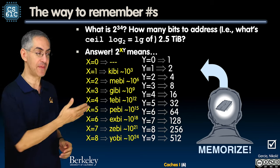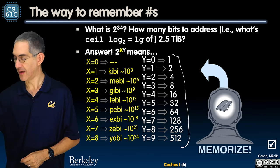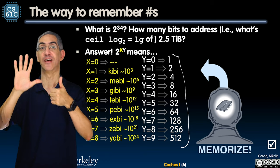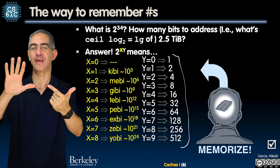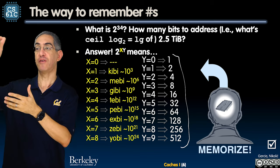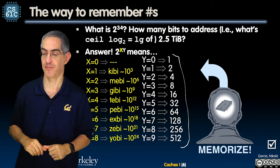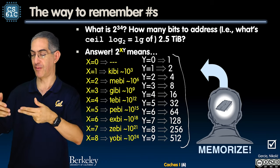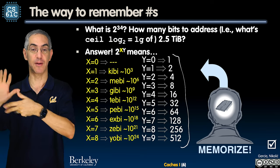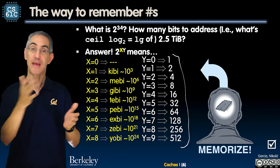Start with the ones column — memorize this sequence: 2^0=1, 2^1=2, 2^2=4, 2^3=8, 2^4=16, 2^5=32, 2^6=64, 2^7=128, 2^8=256, 2^9=512, 2^10=1024. Then for the tens column, use the kibi, mebi, gibi, tebi, pebi, exbi, zebi, yobi sequence.